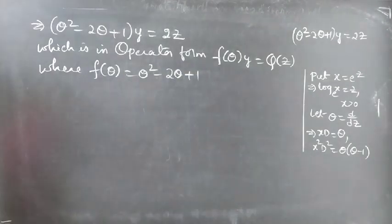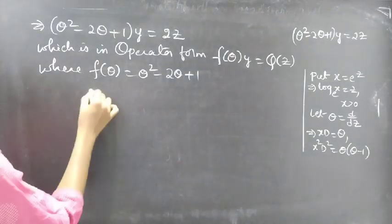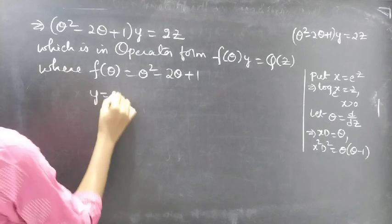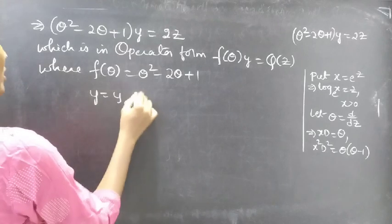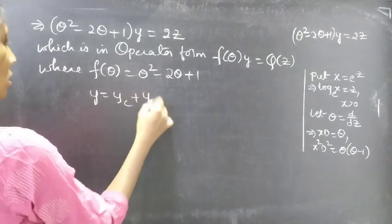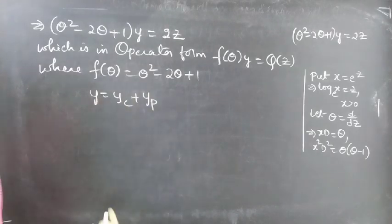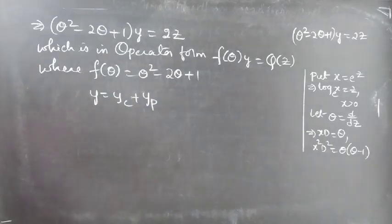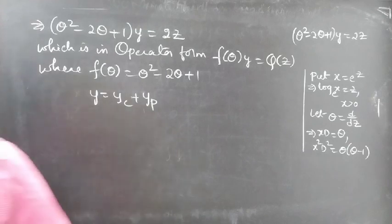Now we need to find the general solution to the given equation, which is given by y equals yc plus yp. We need to find both yc and yp. First we find yc using the auxiliary equation.